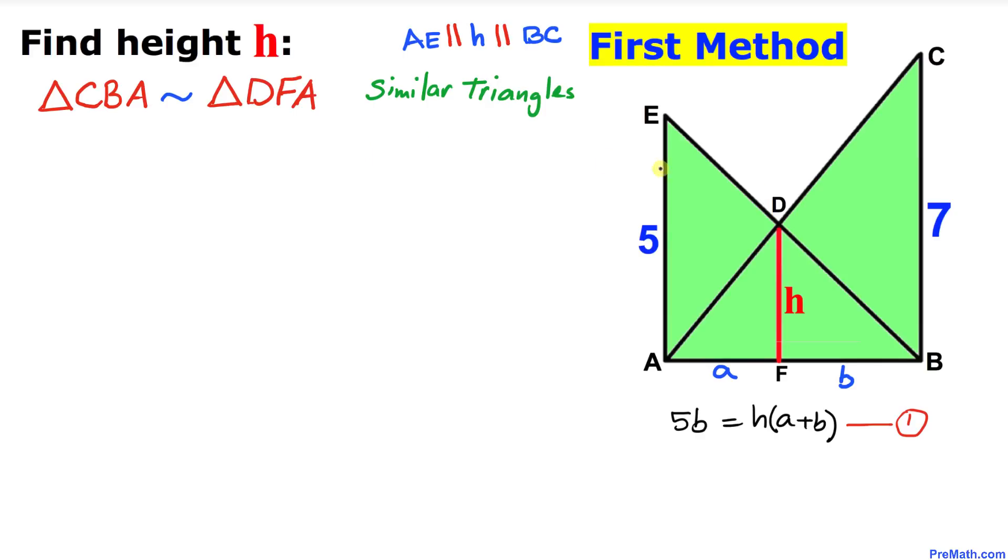Here's our next step. Let's focus on these two other triangles, triangle CBA and triangle DFA. We can see that these two triangles are similar as well according to angle-angle-angle theorem, because these two triangles share the same angle A. And since these two walls are parallel, that means these two angles are same.